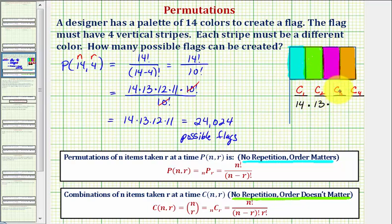To select the third color there would only be 12 ways, because two colors have already been selected, and 11 ways to select the fourth color.